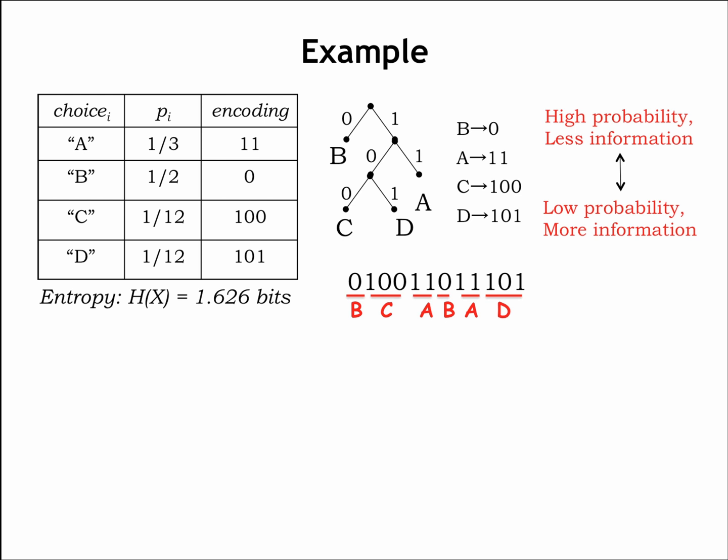Starting at the root, the first encoded bit is 0, which takes us down the left branch to the leaf B, so B is the first symbol of the decoded data. Starting at the root again, 1 takes us down the right branch, 0 the left branch from there, and 0 the left branch below that, arriving at the leaf C, the second symbol of the decoded data.